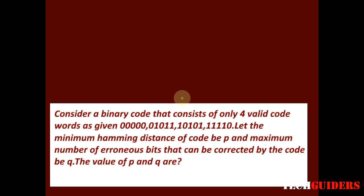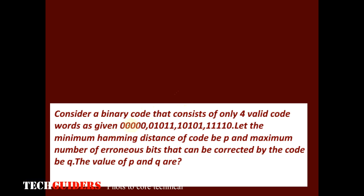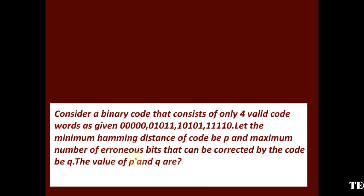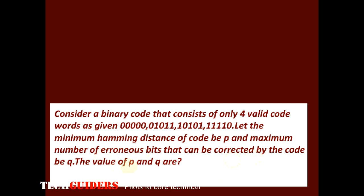Consider a binary code that consists of only four valid codewords as given. Let the minimum Hamming distance of the code be P and the maximum number of erroneous bits that can be corrected by the code be Q. What is the value of P and Q?